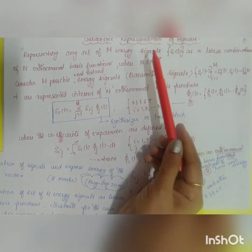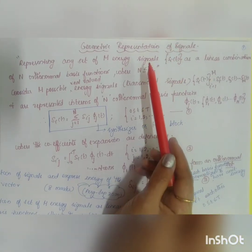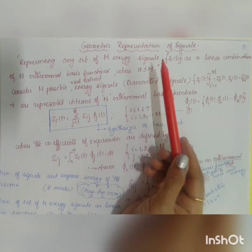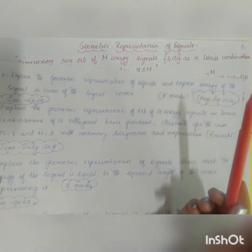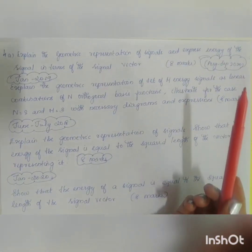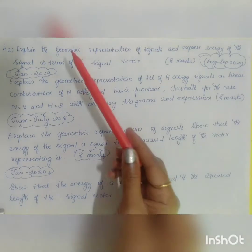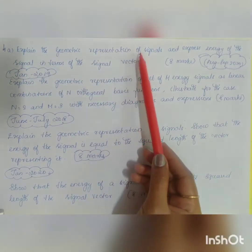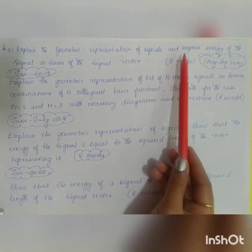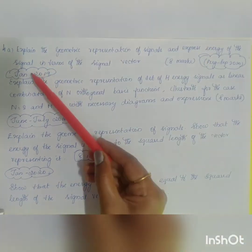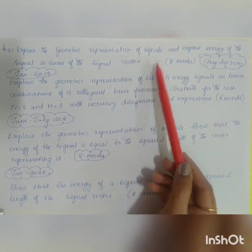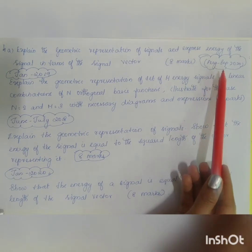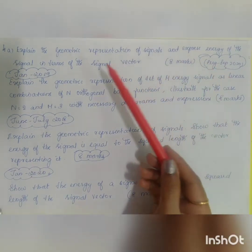The next topic is geometric representation of signals — the first topic from the second module. One university question asks to explain the geometric representation of signals and express the energy of the signal in terms of signal vector, asked for eight marks from August/September 2020.